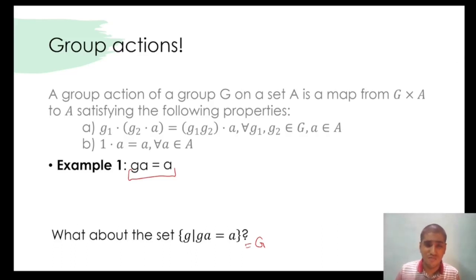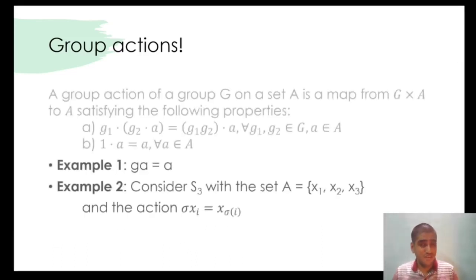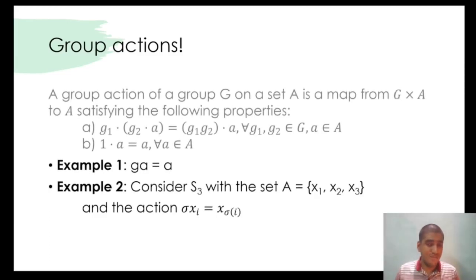Here's another one. Take the group S3, symmetric group of degree 3, and the set A equals {x1, x2, x3}. Define the group action as sigma xi, where sigma is a permutation in S3, sigma xi is equal to x sigma of i. Would you like to try to prove that this is in fact a group action?